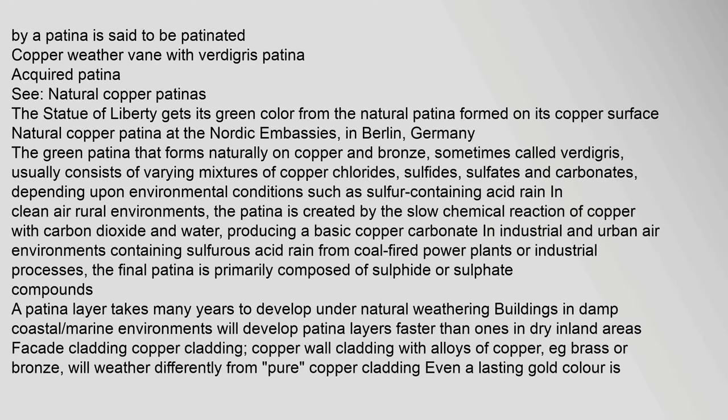Natural copper patinas: The Statue of Liberty gets its green color from the natural patina formed on its copper surface. The green patina that forms naturally on copper and bronze, sometimes called verdigris, usually consists of varying mixtures of copper chlorides, sulfides, sulfates and carbonates. Depending upon environmental conditions, in clean air rural environments the patina is created by the slow chemical reaction of copper with carbon dioxide and water, producing a basic copper carbonate.